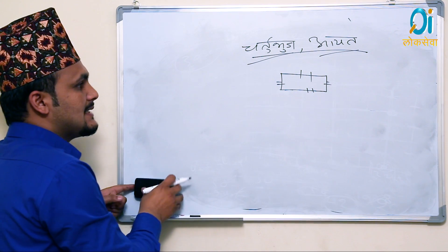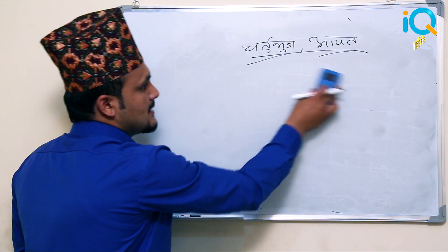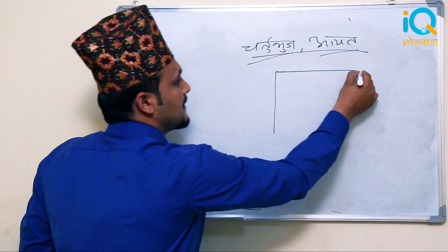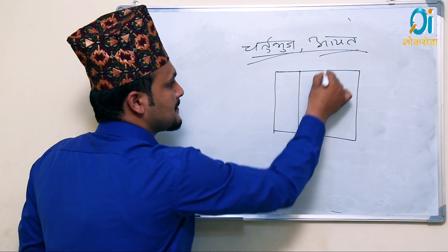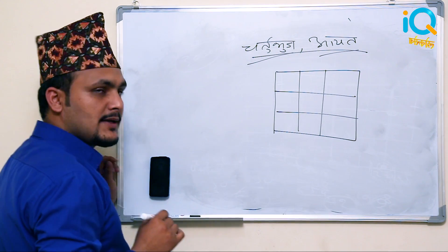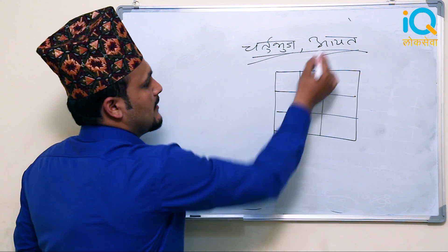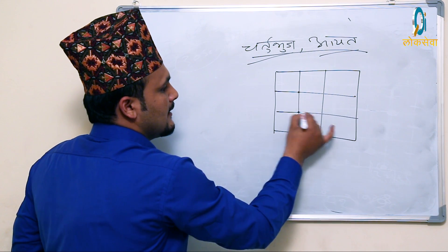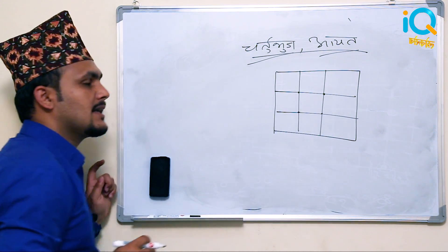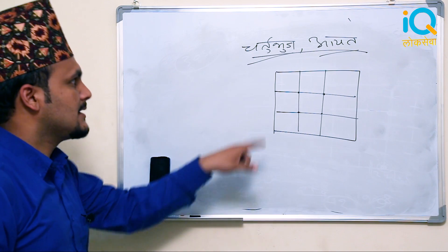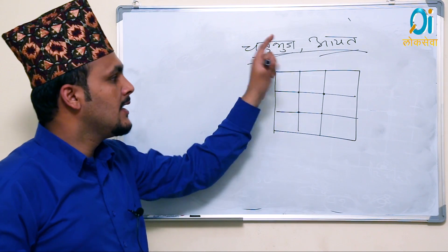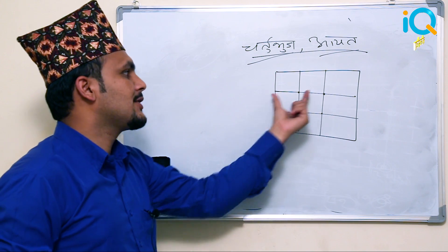The matrix is the same as the matrix, so we have to choose a matrix. This is the matrix. The first box is the same as the 2 side. So we have to choose a matrix. If we choose a matrix, we should choose a matrix.